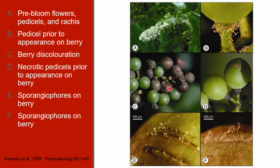Images E and F show sporangiophores emerging from cracks in the berries. In this study, the cracks in the berries were artificially created by making small incisions on the berry surface. The fact that they are sporulating only when artificially wounded becomes important as we discuss the disease cycle as well as disease management in future lectures.